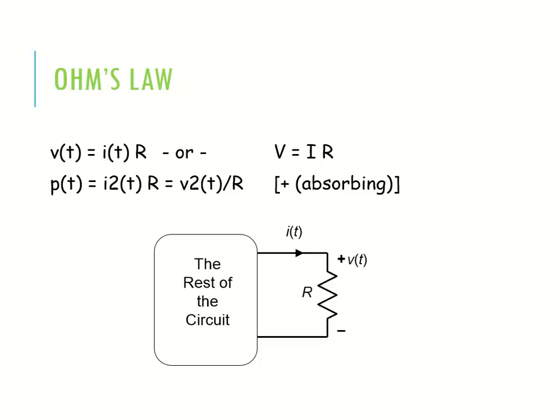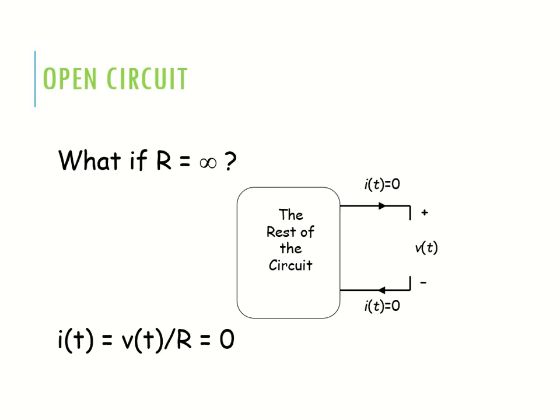Now Ohm's law — Ohm's law defines the relation between V and I, where I is the current flowing through resistor R and V is the potential difference between the two terminals of R. It is defined as V = IR, meaning voltage is the multiplication of current into resistance.